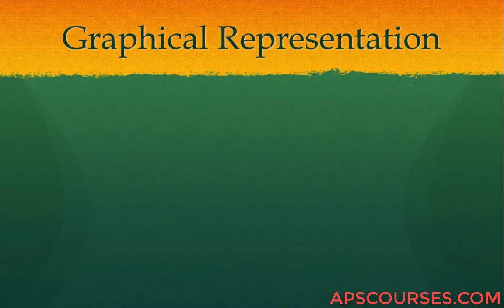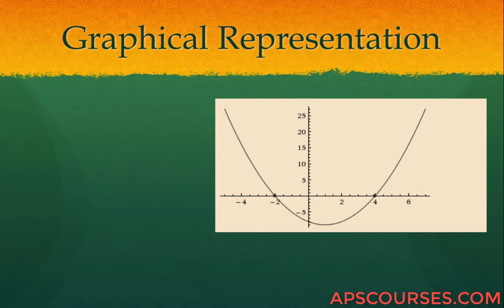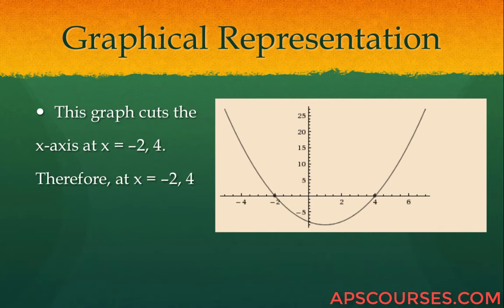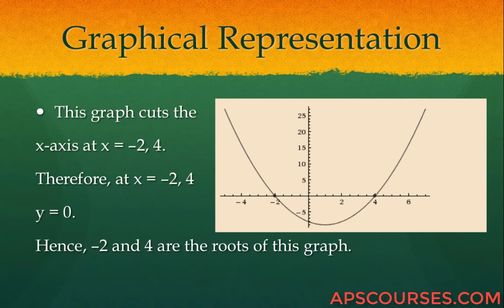The graphical representation: this graph intersects the x-axis at minus 2 and 4. This graph cuts the x-axis at x equals minus 2 and x equals 4. Hence, at these values y is equal to 0, so minus 2 and 4 are the roots of this graph.